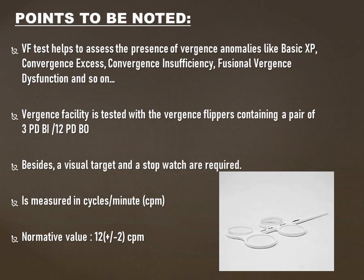In basic exophoria, the amount of exophoria is the same for both distance and near. In convergence excess, the amount of esophoria is more at near than distance. In convergence insufficiency, the patient is more exophoric at near than distance. And in fusional vergence dysfunction, anomalies are found in both the divergence and the convergence of the patient.